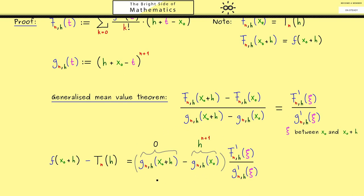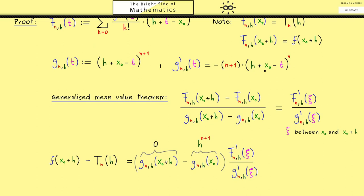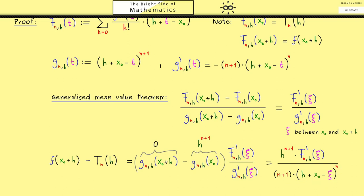Now we calculate the derivative of g. Since g is a polynomial, the power comes to the front and we get a minus sign from the inner derivative: g prime equals minus (n+1) times (h plus x0 minus t) to the power n. Writing xi instead of t, we get h to the power n+1 times F prime of xi divided by the term from above, with both minus signs cancelling.